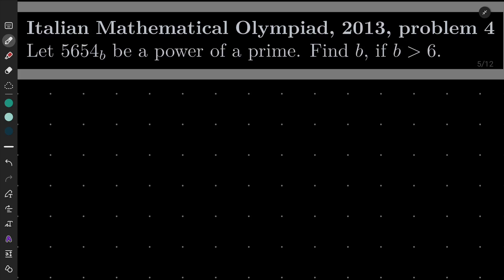Hello friends, in this video I'd like to solve the following problem from the Italian Mathematical Olympiad 2013, problem number 4. Let 5654 written in base B be a power of a prime. Find this base B knowing that B is greater than 6.